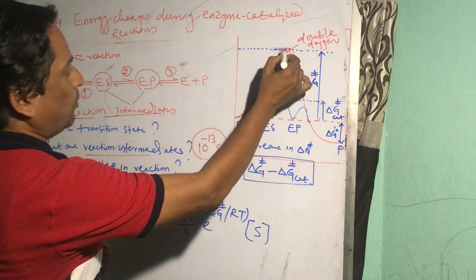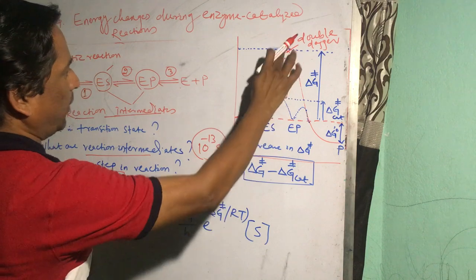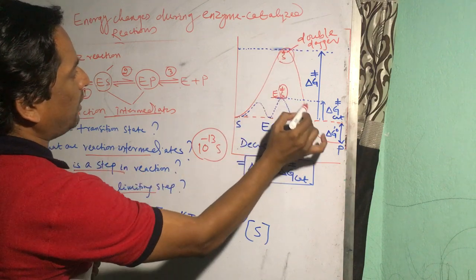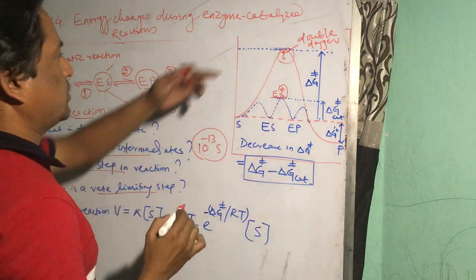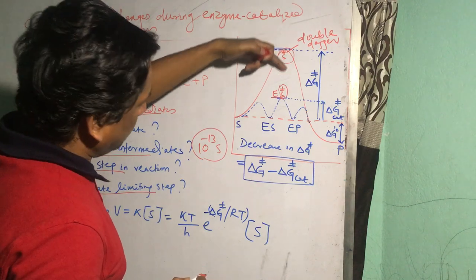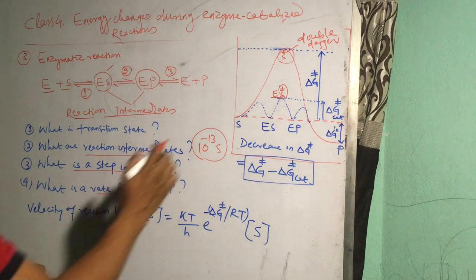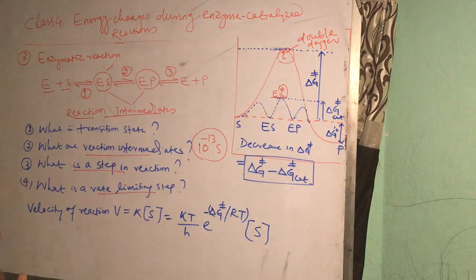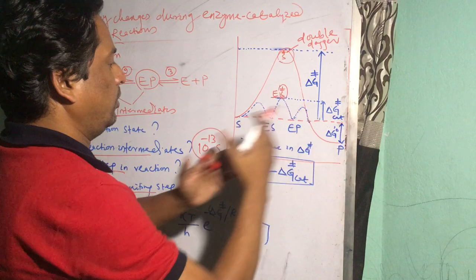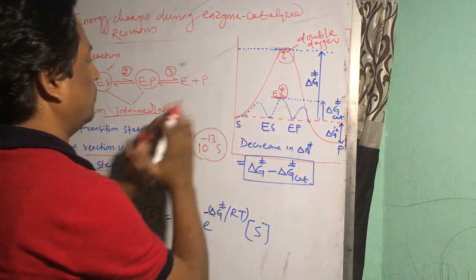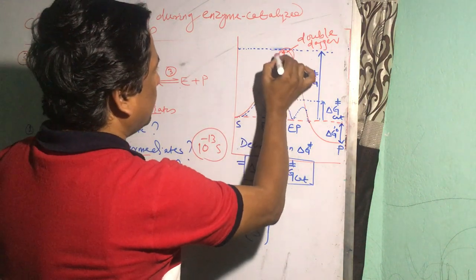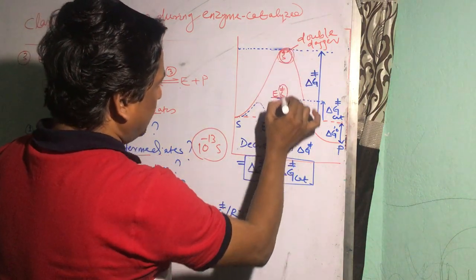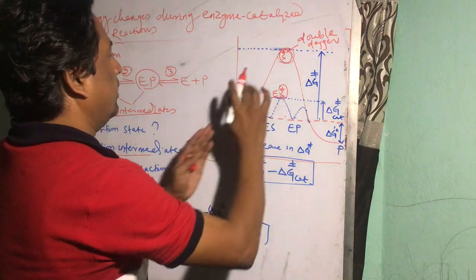So when the enzyme comes into play, it forms an optimal complex with the substrate so that it not only decreases this energy barrier, but also facilitates the dissociation of these complexes into the product side or from product side to the substrate side. This determines the velocity of the reaction. Logically when this energy is less, the barrier is lower, the reaction is faster.